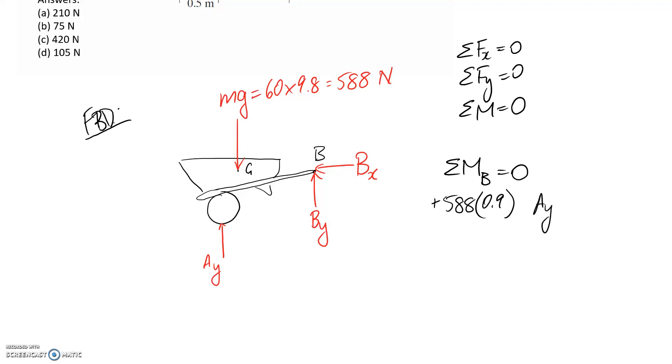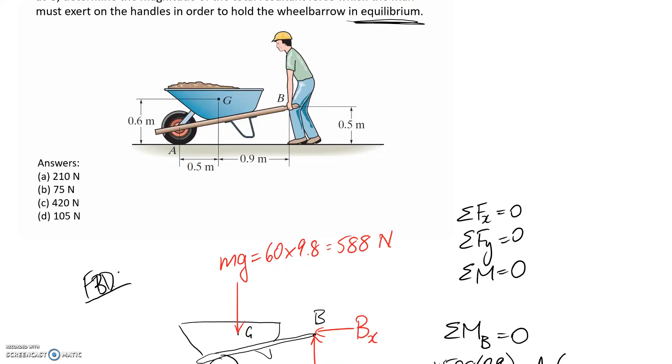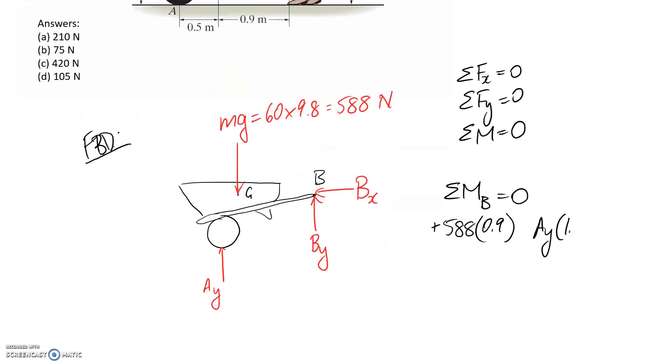And then we've got the support Ay acting at a distance in here that we should be able to get from the other diagram. So it's basically the distance between point A back to the handles horizontally. So 0.5 plus 0.9 gives us 1.4, and the direction this is going to try and push us clockwise about point B so it should be negative.